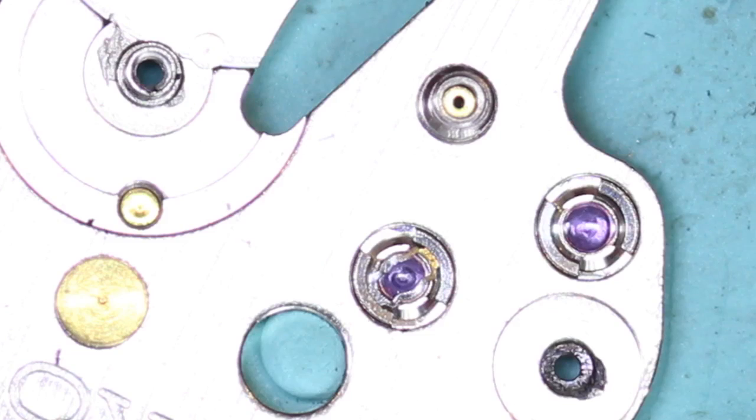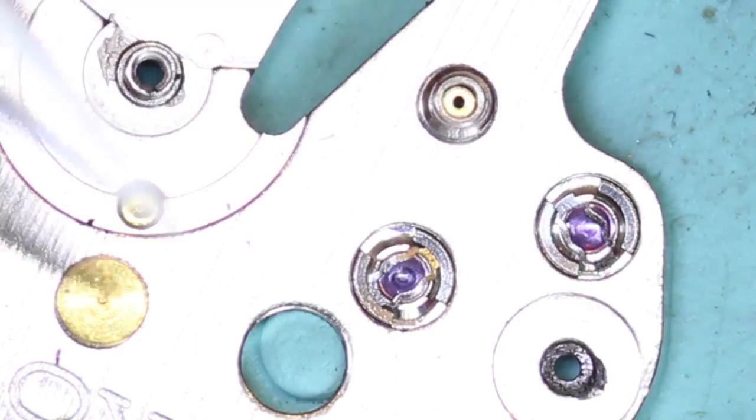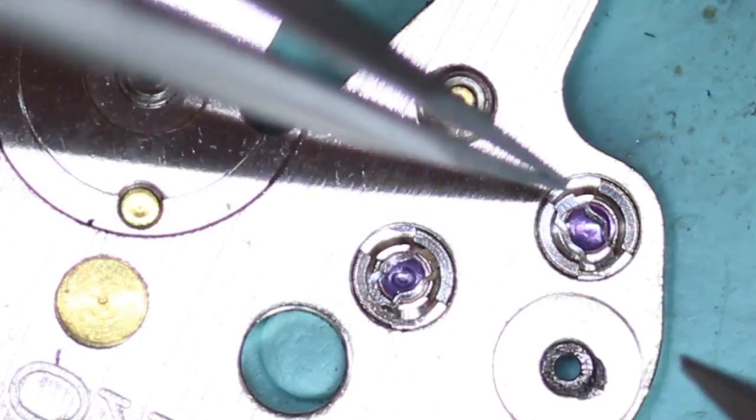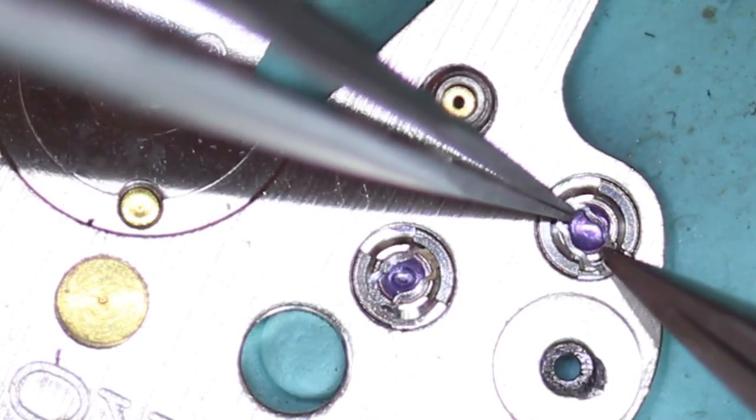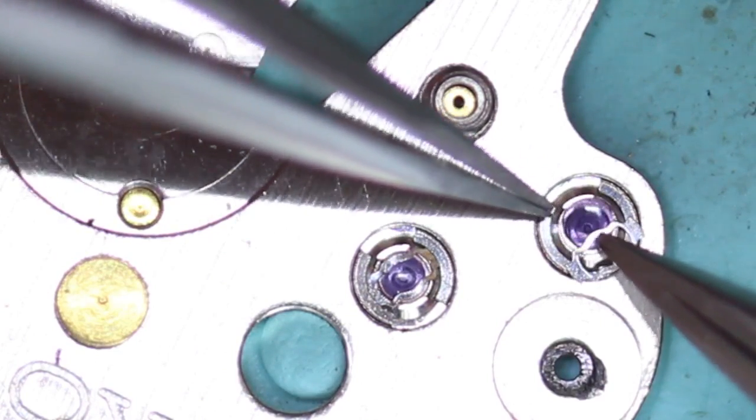Because if the oil gets displaced, I've got to start all over again. I have to take out the endstone, clean it, re-oil it and put the endstone back. A lot of messing around. So this way I've put it in dry.